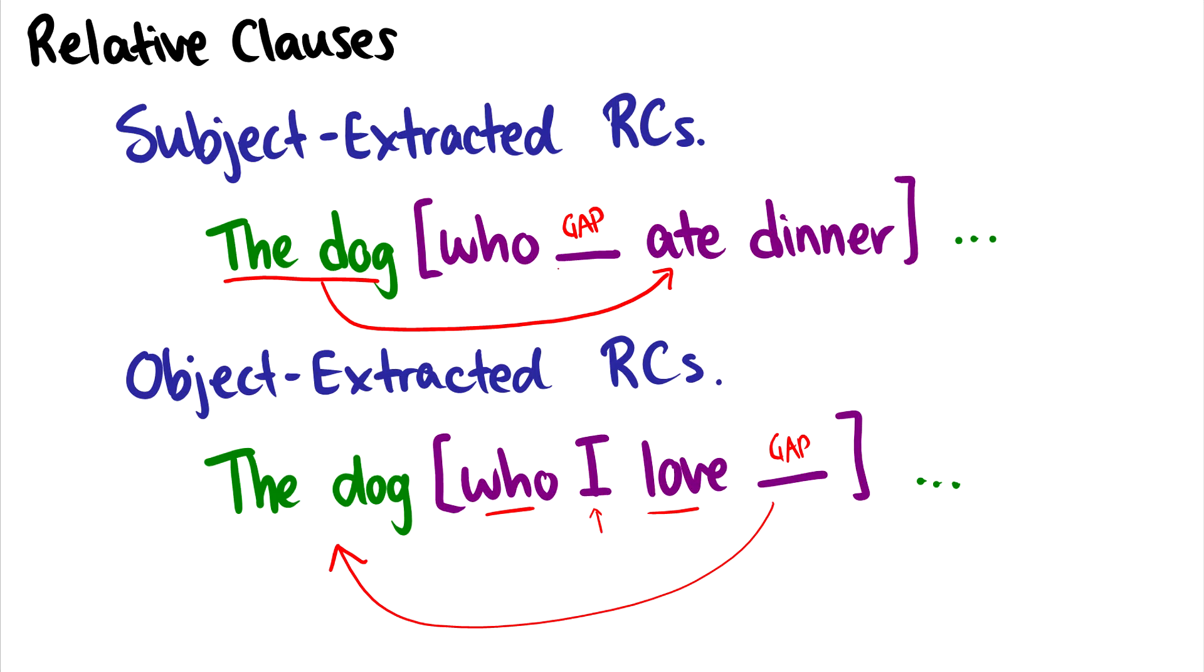So there's subject-extracted relative clauses and object-extracted relative clauses, and these gaps are a great way to understand where the arguments are coming from in any tree. This will really help you with figuring out where these words are in trees, and when you get to syntactic processing courses, the theory behind the differences in processing will also be pretty apparent just based on where the gaps are located and where movement is.